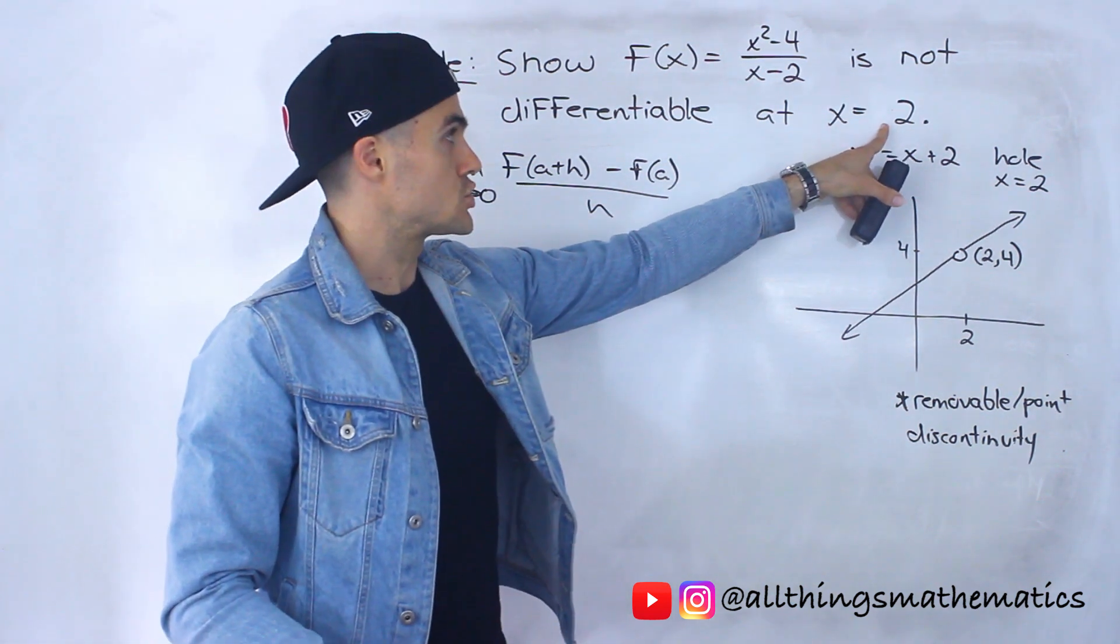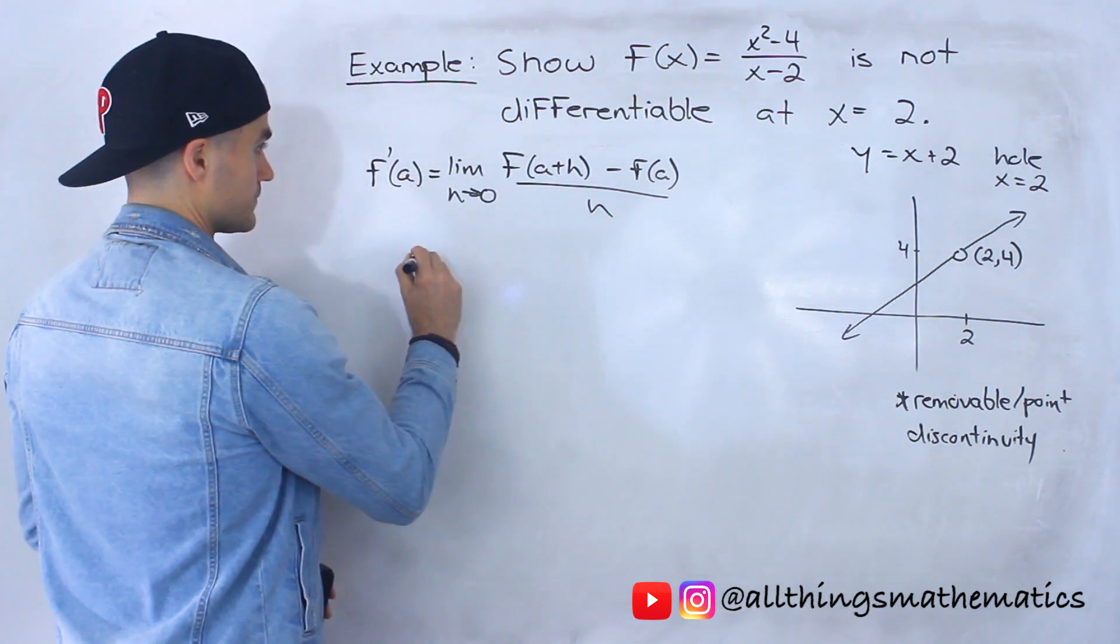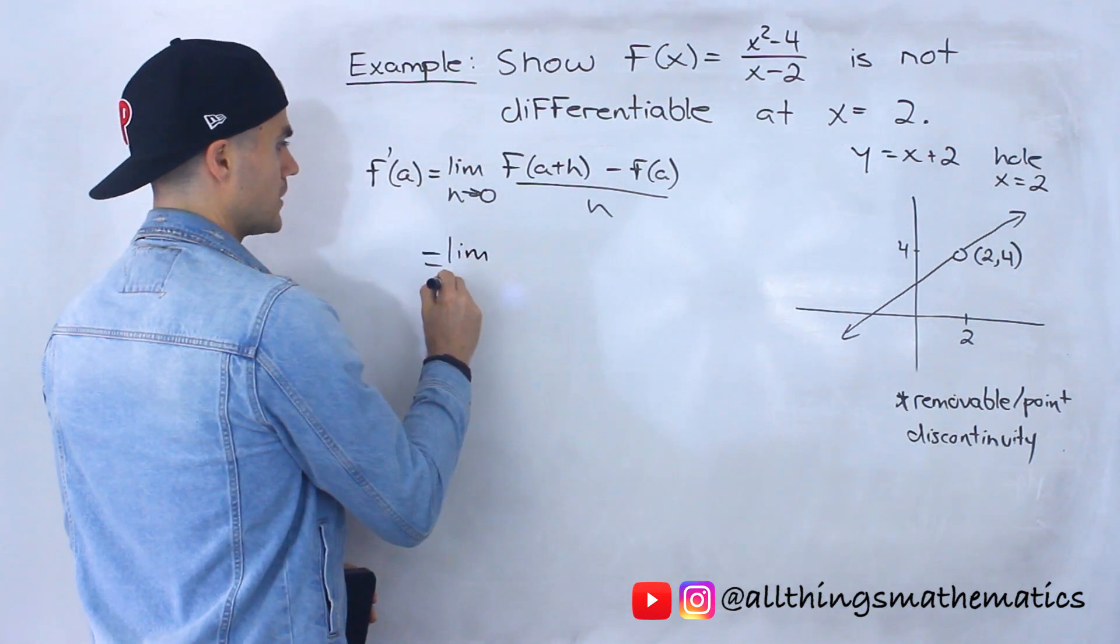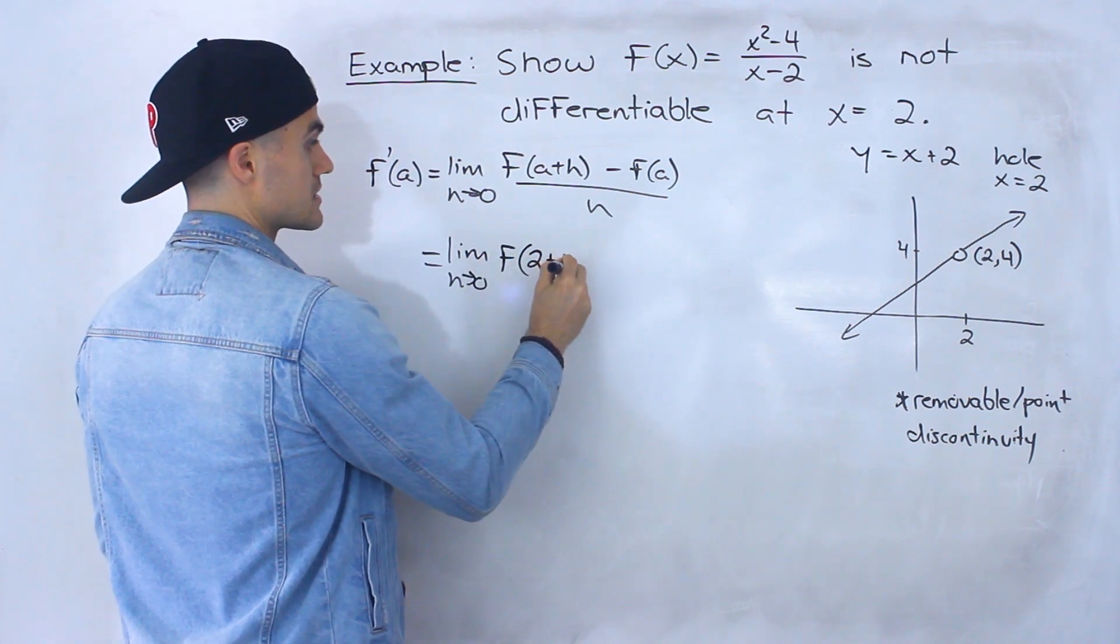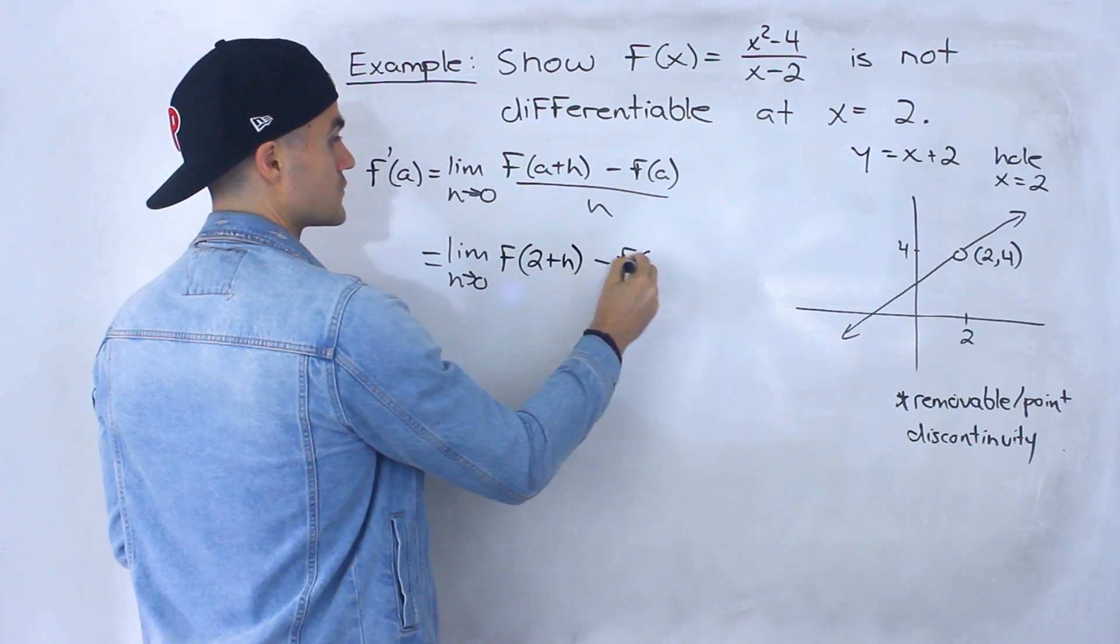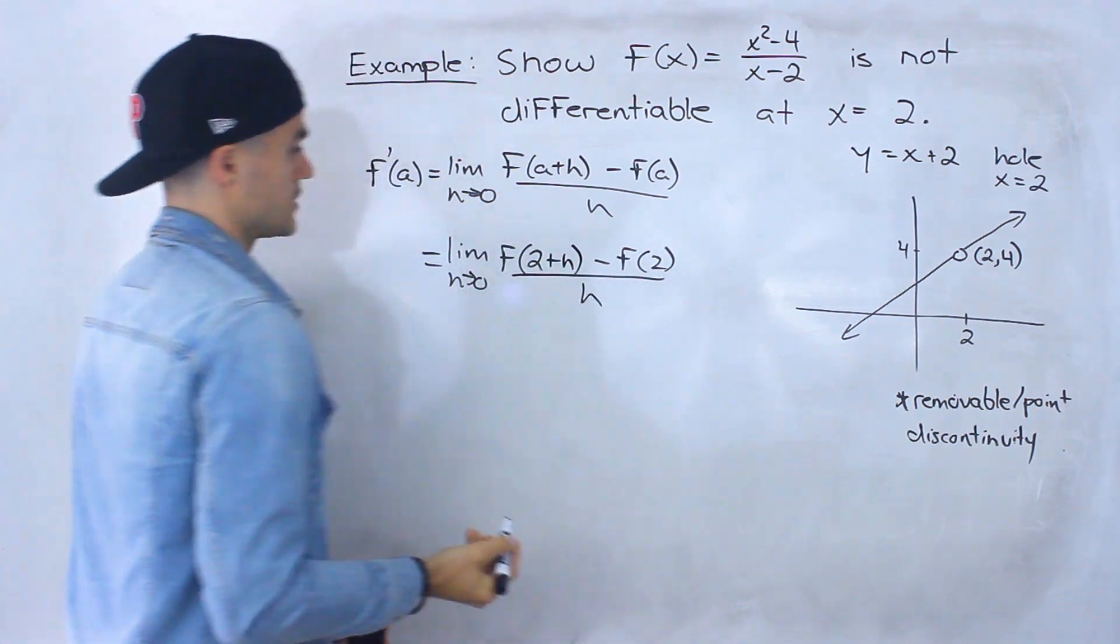So the a value in this case is 2 and then this is the function. So we'll have the limit as h approaches 0 of f of 2 plus h minus f of 2 all over h.